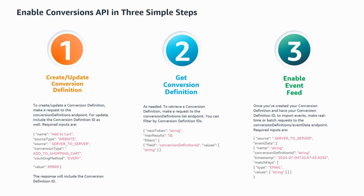Now let's look at the different steps to enable Conversion API. The first step is to create a conversion definition using the Conversion Definition endpoint. By calling this endpoint, it will create the shell of your conversion feed.